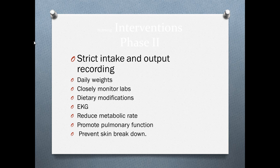We want to reduce the metabolic rate by preventing any infection as well as physical and emotional stress, as both will increase the metabolic rate. Promote pulmonary function via turn, cough, deep breath, and incentive spirometer to prevent hospital-acquired pneumonia, since most of these patients are on bed rest. Prevent skin breakdown — since protein intake is decreased and fluid intake may be restricted, patients are at higher risk for skin breakdown.